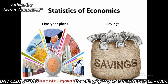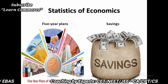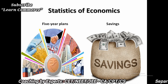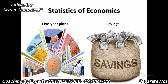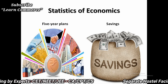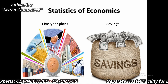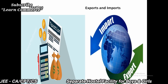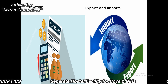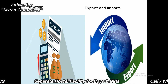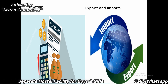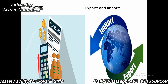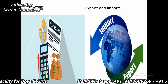2. Statistics in Economics. Statistical methods are useful in understanding economic problems. Formulating economic policies, five-year planning, savings, taxation, exports, and imports — their progress is evaluated by statistical methods. Econometrics is a branch of statistics which deals with the application of statistical methods in the field of economics.